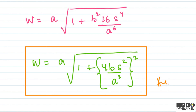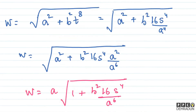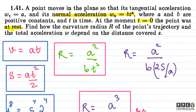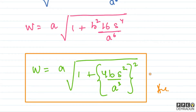So in this problem, we first found the curvature radius of the point's trajectory as a function of distance covered, and then found the total acceleration — which is the vector addition of normal and tangential acceleration. This is our final result. I hope the solution was clear. In case any doubt remains, feel free to contact me. I will be very happy to help you. Take care, bye bye.